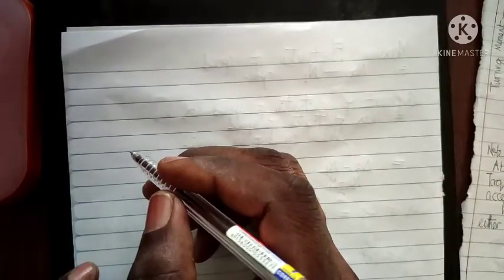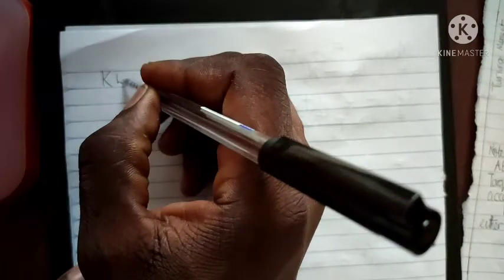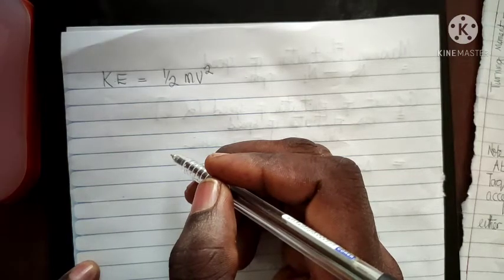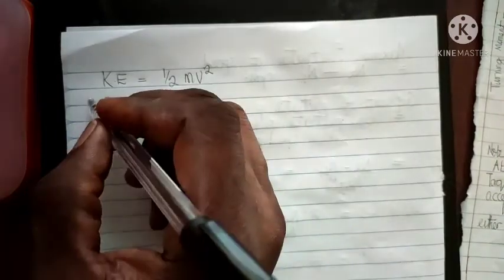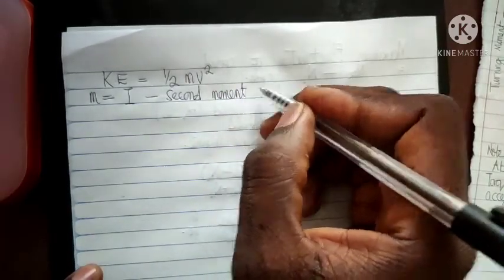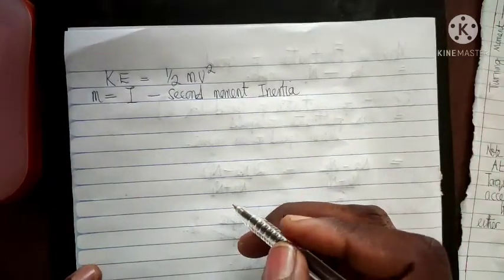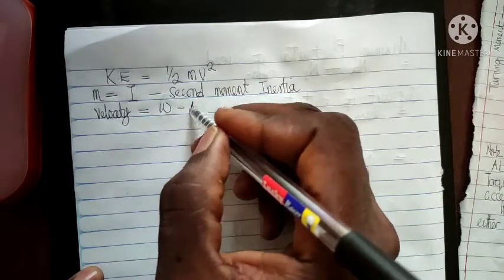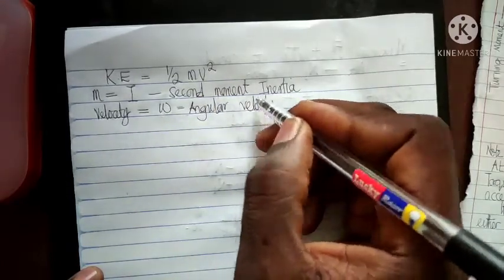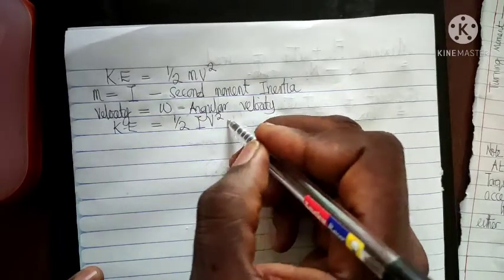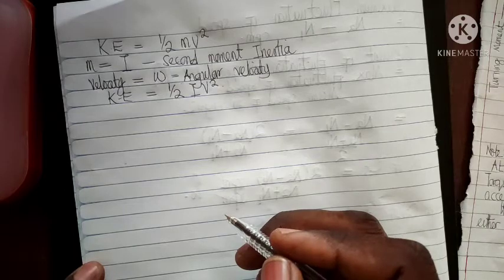We are now looking at the energy stored in a flywheel. Since any body in motion undergoes kinetic energy, KE = ½mv². For the flywheel, since we are dealing with cyclic rotation, m is replaced with I (second moment of inertia) and linear velocity v is replaced with angular velocity ω. Therefore the kinetic energy becomes E = ½Iω².